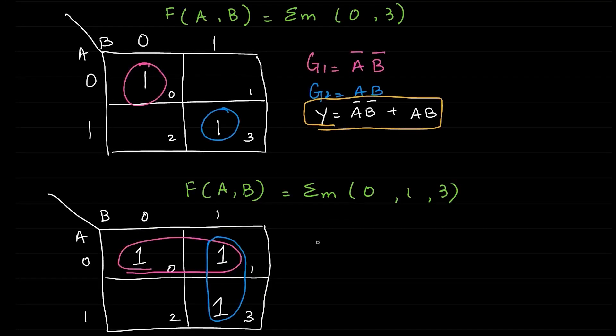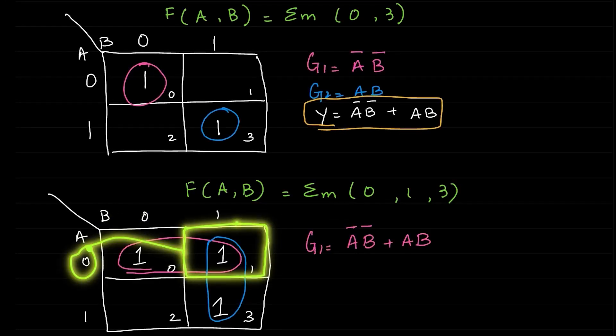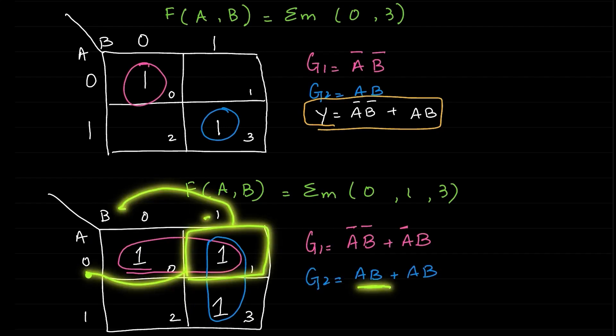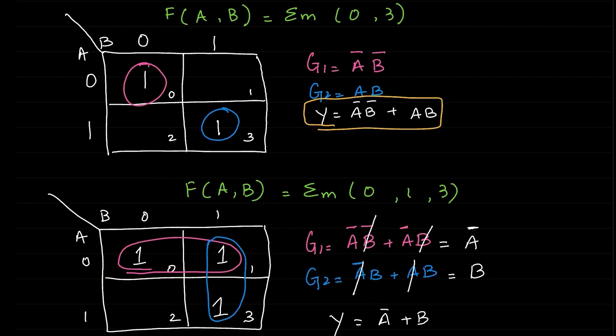Hi, in this video I'll walk you through a couple of examples to solve two variable K-maps step by step. The given equation for our first example is F(A,B) equals to min term of 0 and 3.